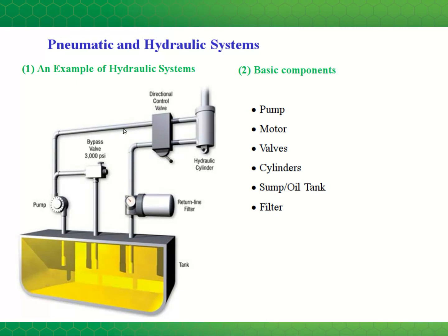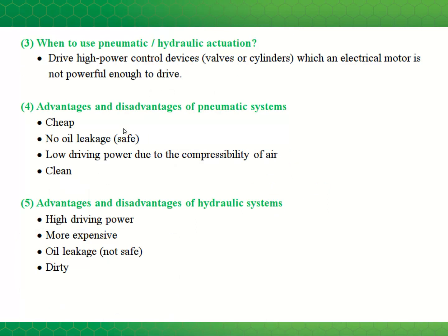There are pros and cons to pneumatic and hydraulic systems. Hydraulic systems are used to drive high-power devices and are more expensive than pneumatic systems. Hydraulic systems also have problems with leakage, and since the fluid is oil, it can contaminate the system. So it's common to see hydraulic actuators avoided in places like food processing plants where leakage of the fluid would be a concern.